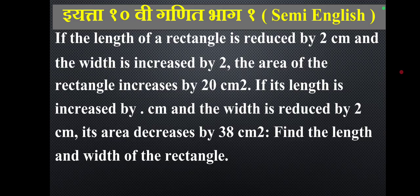If the length of a rectangle is reduced by 2 cm and the width is increased by 2 cm, the area increases by 20 cm². If its length is increased by 3 cm and width is reduced by 2 cm, the area decreases by 38 cm². Find the length and width of the rectangle.